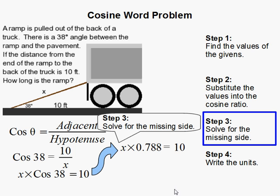And then what I did here was I plugged in cosine of 38 degrees in my calculator. Make sure it's in degree mode, otherwise your answer will be very off. So now that gave me x times 0.788 equals 10. I just rounded it to the nearest thousandths place.